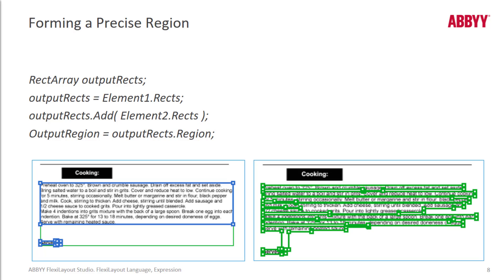You can also form a precise region using this code. Your OCR results will be the same, but this is formed differently. What we've got here is just a series of rectangles that includes where the text exists and doesn't include any area beyond that.